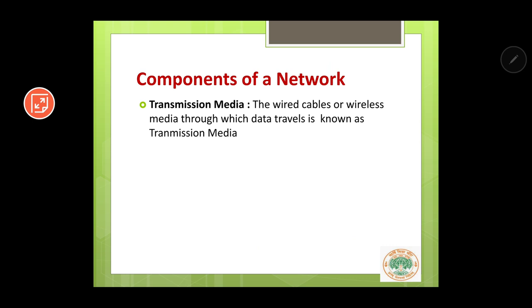Now let us go to transmission media. What is transmission media? For the data to go from one place to another, some kind of wires or wireless medium is required. For example, just as for going from one place to another you require roads, similarly for data to travel from one place to another we require some wires or wireless medium.